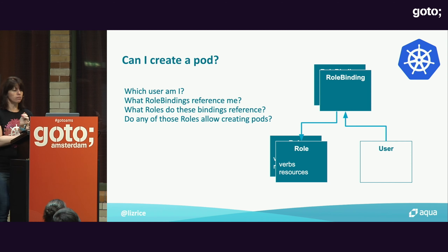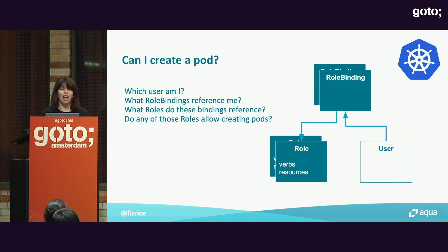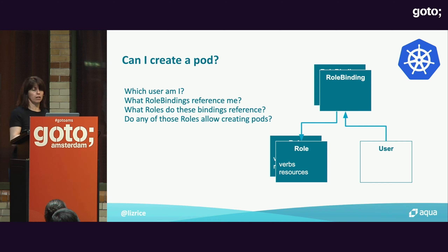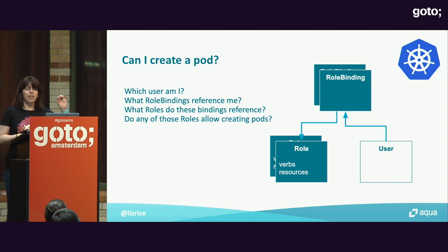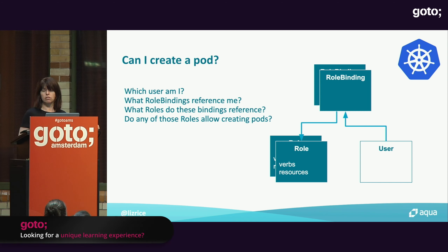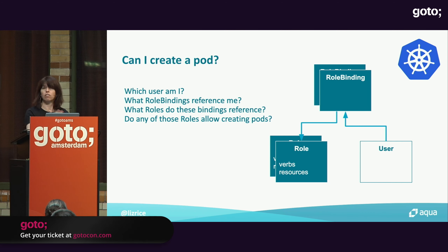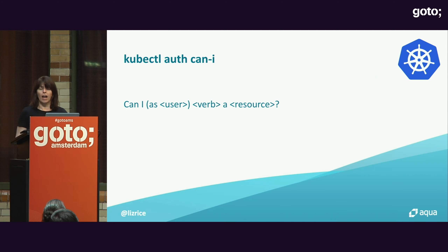In Kubernetes, it's more complicated because of all the extra abstractions. You have to start from the user definition, find all the role bindings that refer to that subject, then find all the roles those role bindings reference, and check if any of those roles allow the particular action on that type of resource. There is a tool that allows you to ask this question: kubectl auth can-i. For example, 'kubectl auth can-i create pods' — and yes, I can. And 'kubectl auth can-i create pods --as alice' — Alice can't create pods.